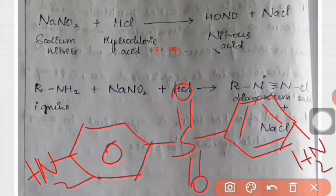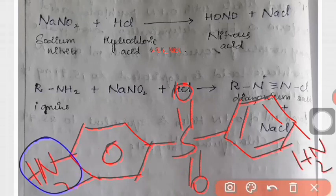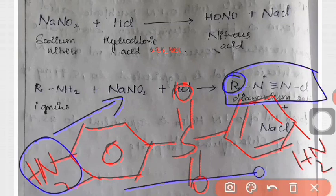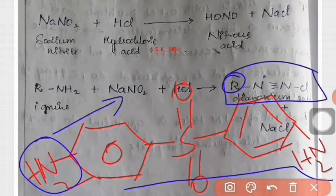This amino group reacts with NaNO2 and HCl to produce the diazonium compound. R represents the dapsone remaining part of the molecule.